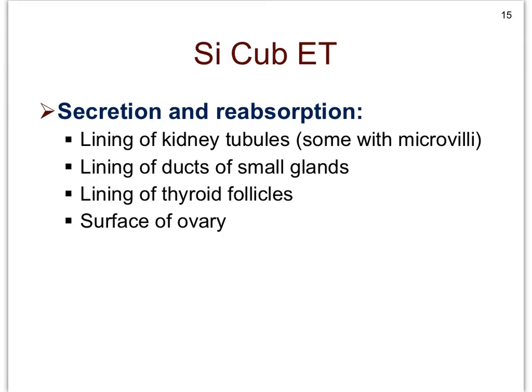There are more examples of simple squamous epithelial tissue. For instance, the walls of the little air sacs of the lungs — called alveoli — are also made up of simple squamous epithelial tissue, which makes it much easier for oxygen and carbon dioxide to cross their walls. But let's move on to simple cuboidal epithelial tissue.